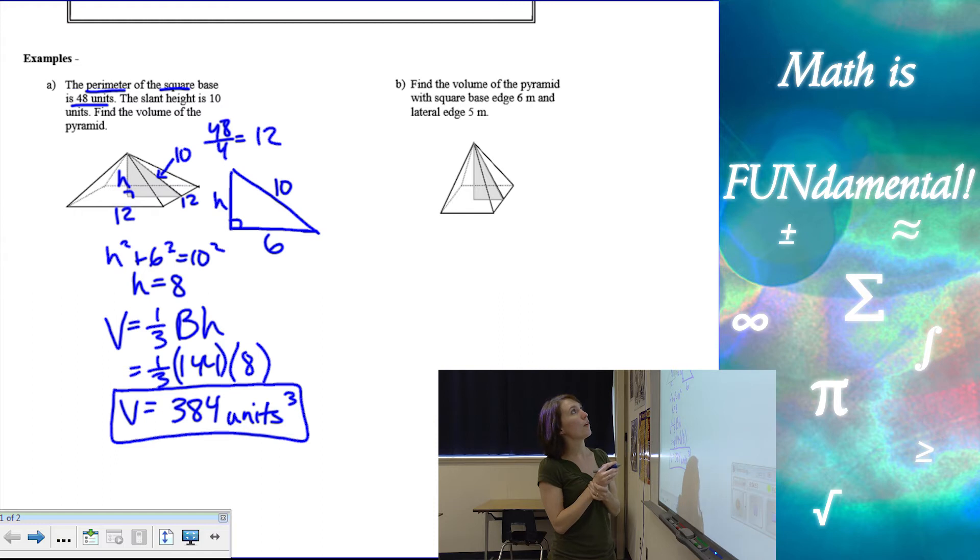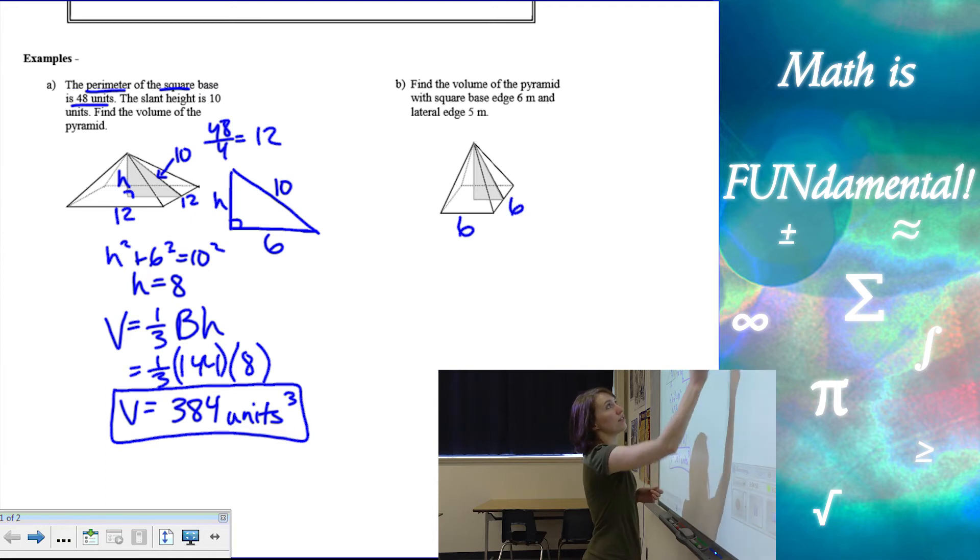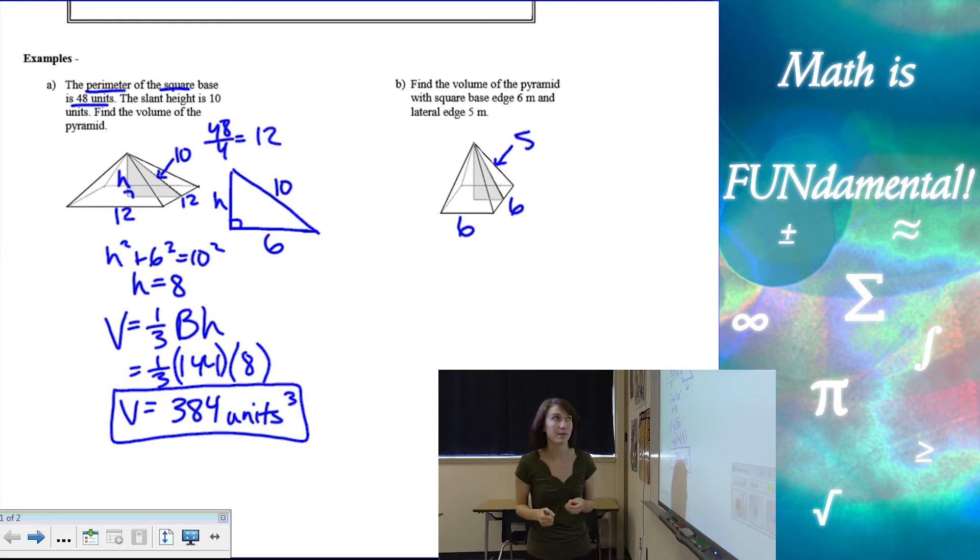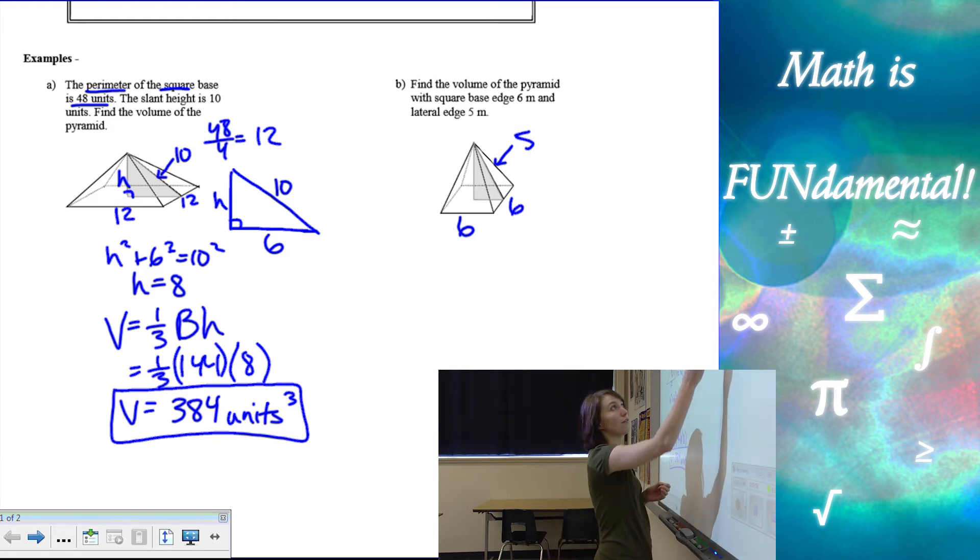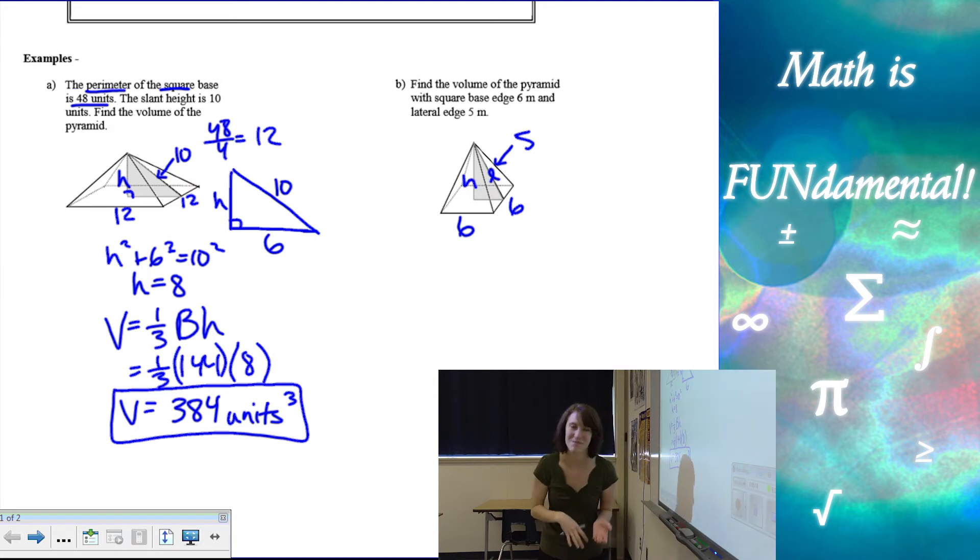All right, let's look at the next one. So we want to find the volume of the pyramid with square base edges 6 meters, and it's a square, so they're all 6, and lateral edge 5 meters. So this one is going to be 5 meters. So again, I'm going to need to find, well, in this case, we actually have to find the slant height in order to get the height, in order to get the volume. So we have a couple things we need to find here.